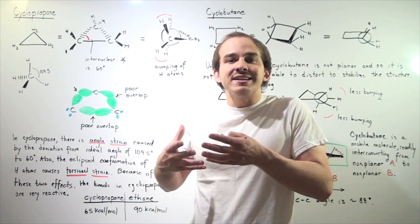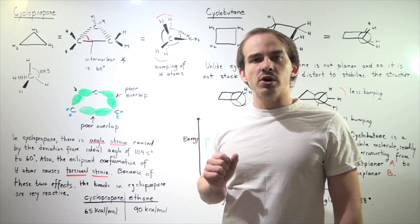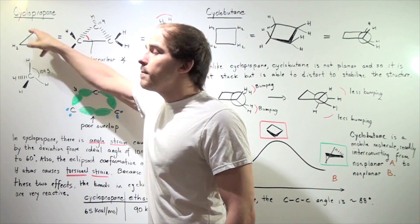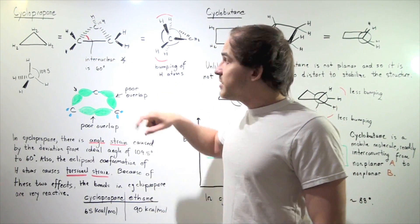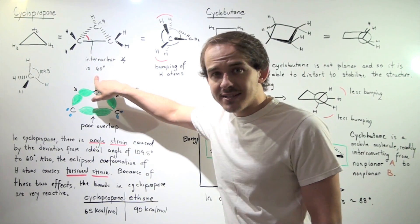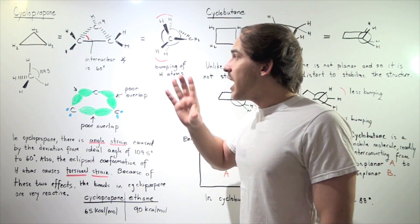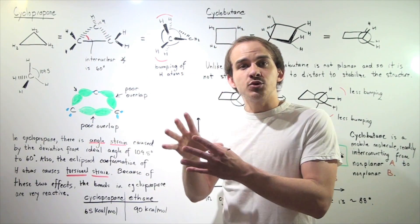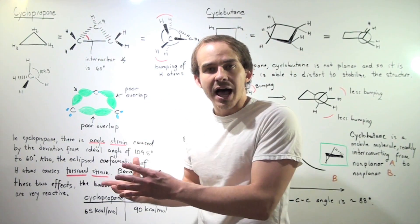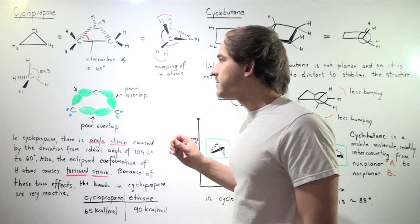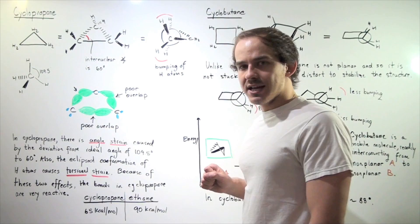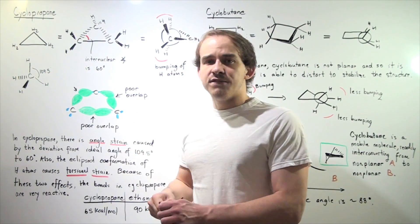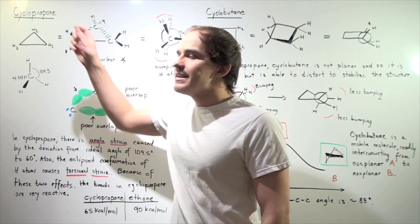Compounds will try to achieve this ideal angle of 109.5°. However, in cyclopropane, we have an equilateral triangle formation, meaning the internuclear carbon-carbon-carbon angle is only 60°. This 60° is very far from the ideal 109.5°, resulting in a lot of electrostatic repulsion between the electrons in the bonds, destabilizing the overall structure. This is known as angle strain.